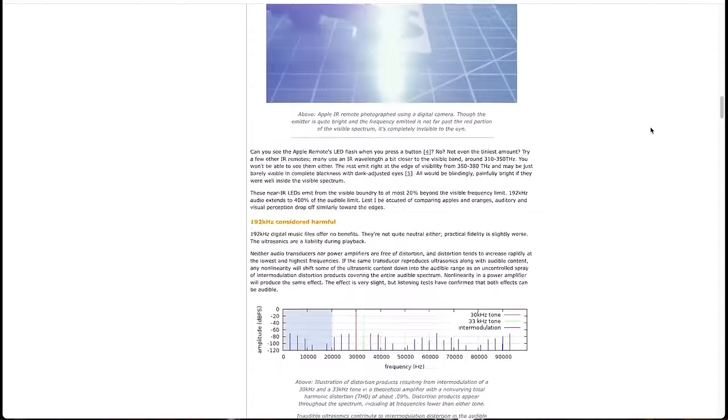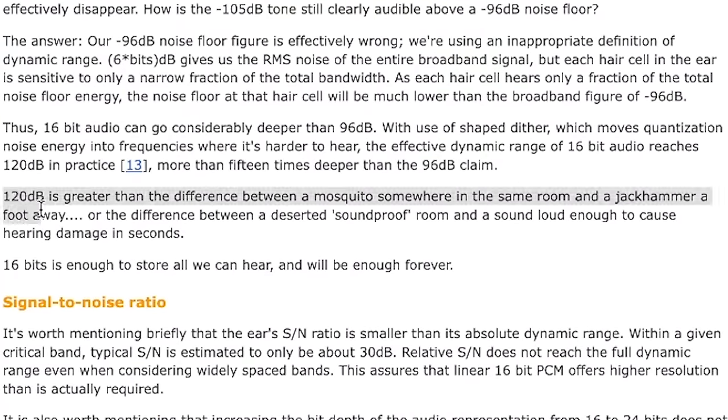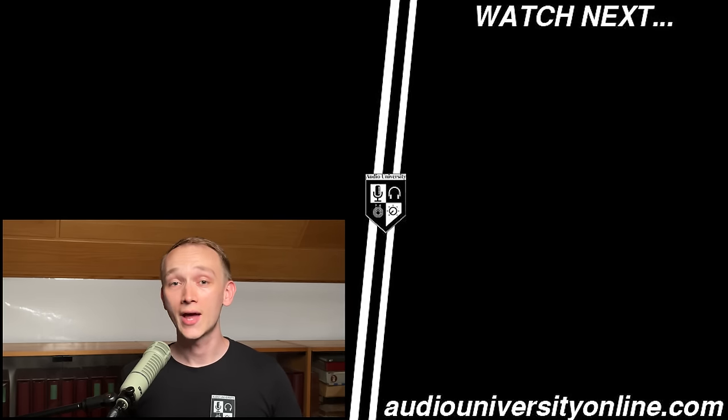This next quote from a ZIF.org article is so mind-blowing that it made me literally laugh out loud when I read it, so get ready. 120 dB is greater than the difference between a mosquito somewhere in the room and a jackhammer a foot away. Think about that for a second. All this to say, 16-bit 44.1 kHz audio is more than enough for playback, even on the very best hi-fi systems. In fact, attempting to play back ultrasonic content by playing a 192 kHz file not only takes up four times the hard drive space without any audible benefit, but it might actually cause audible distortions that lead to decreased fidelity. I'll leave some resources below so you can do some research on your own. But there are very good reasons why we use 24-bit audio with high sample rates in music production, which is what I'll talk about in a future video. So make sure to subscribe to Audio University so you won't miss it when it comes out.